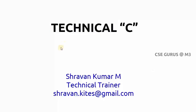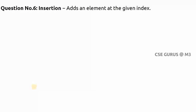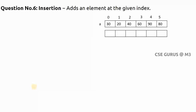Welcome to the video lectures on Technical C by Stravankumar Mantri. Question number six is insertion - inserting an element in an array at a particular index. Let's look at an example. We have an array with six elements, and I want to insert element 50 at position three.